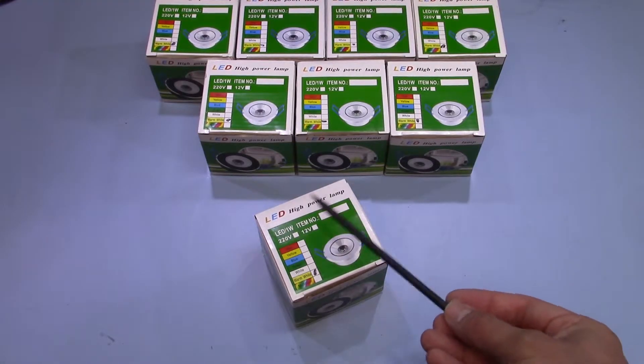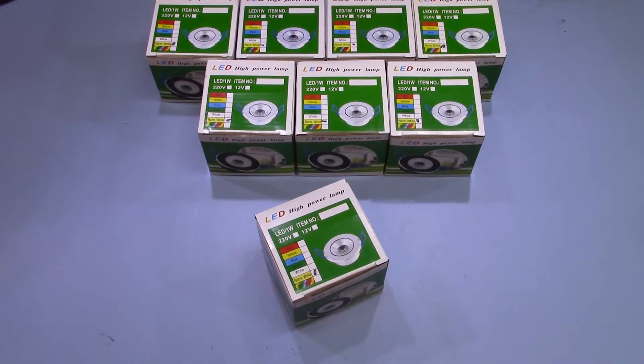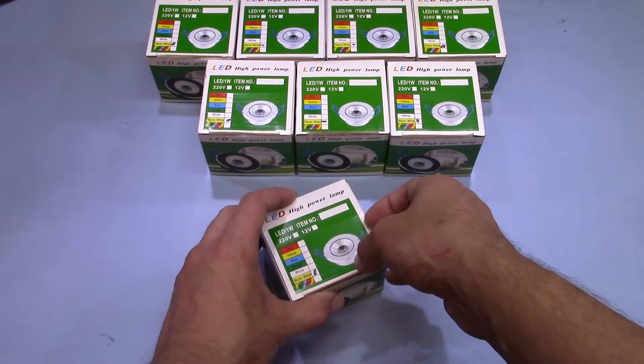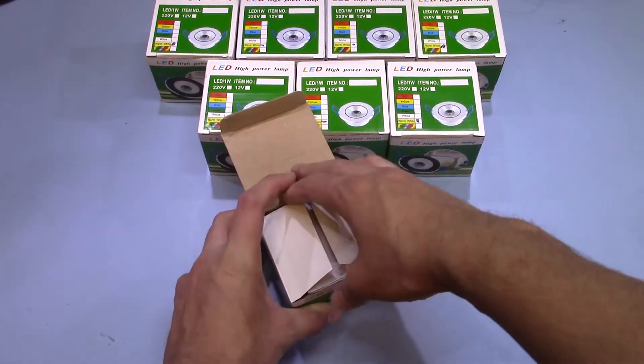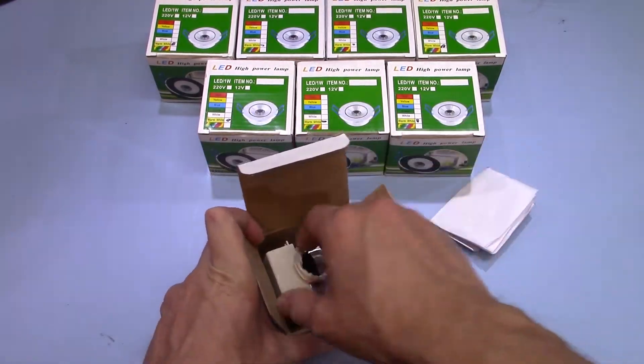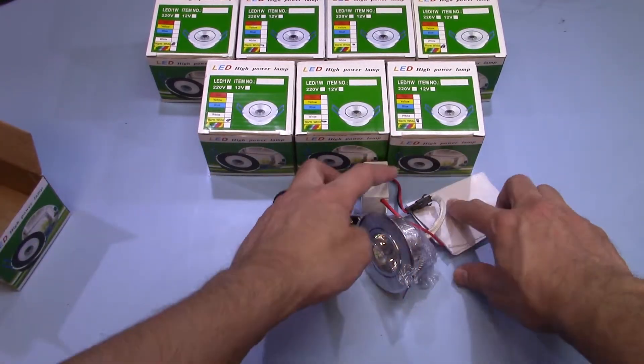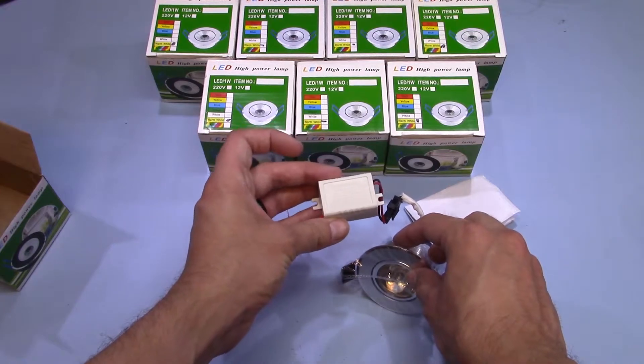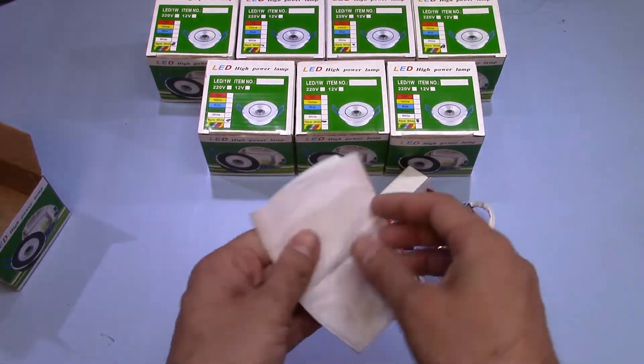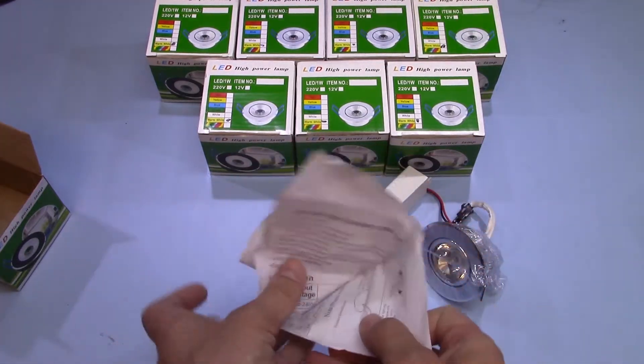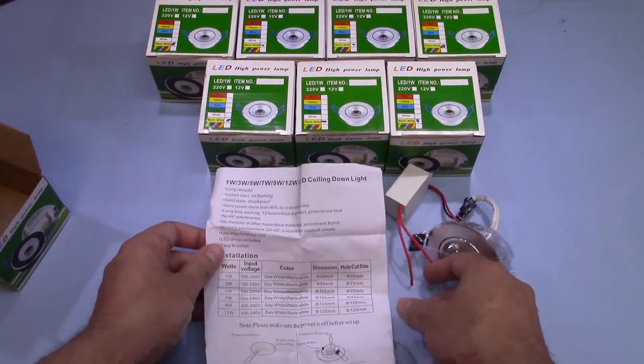They don't need to be very bright so one watt is more than adequate, although we may see if we can change the LED anyway. So let's have a look what's inside the box. We've got the downlight unit, an LED driver, and some instructions.